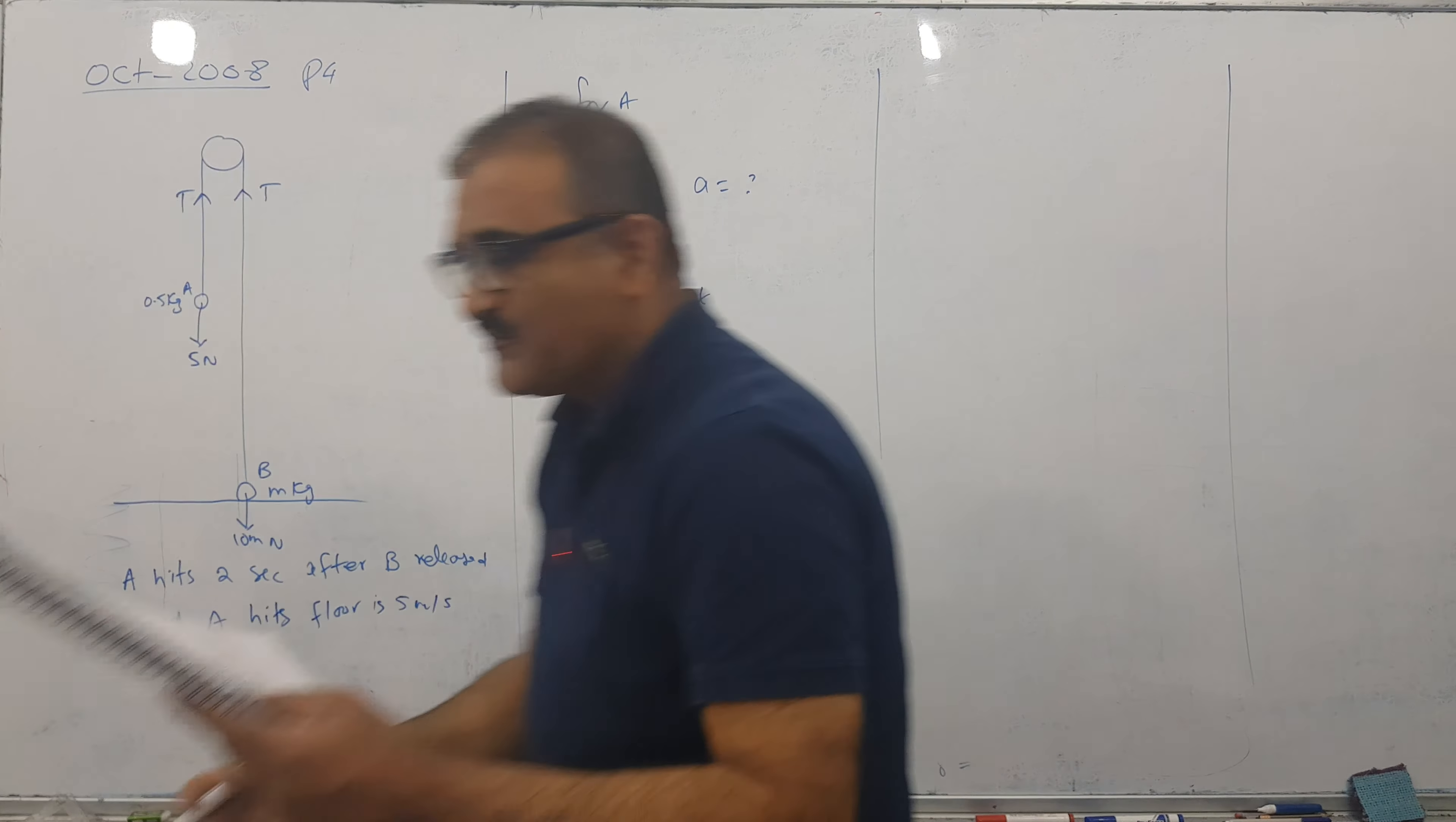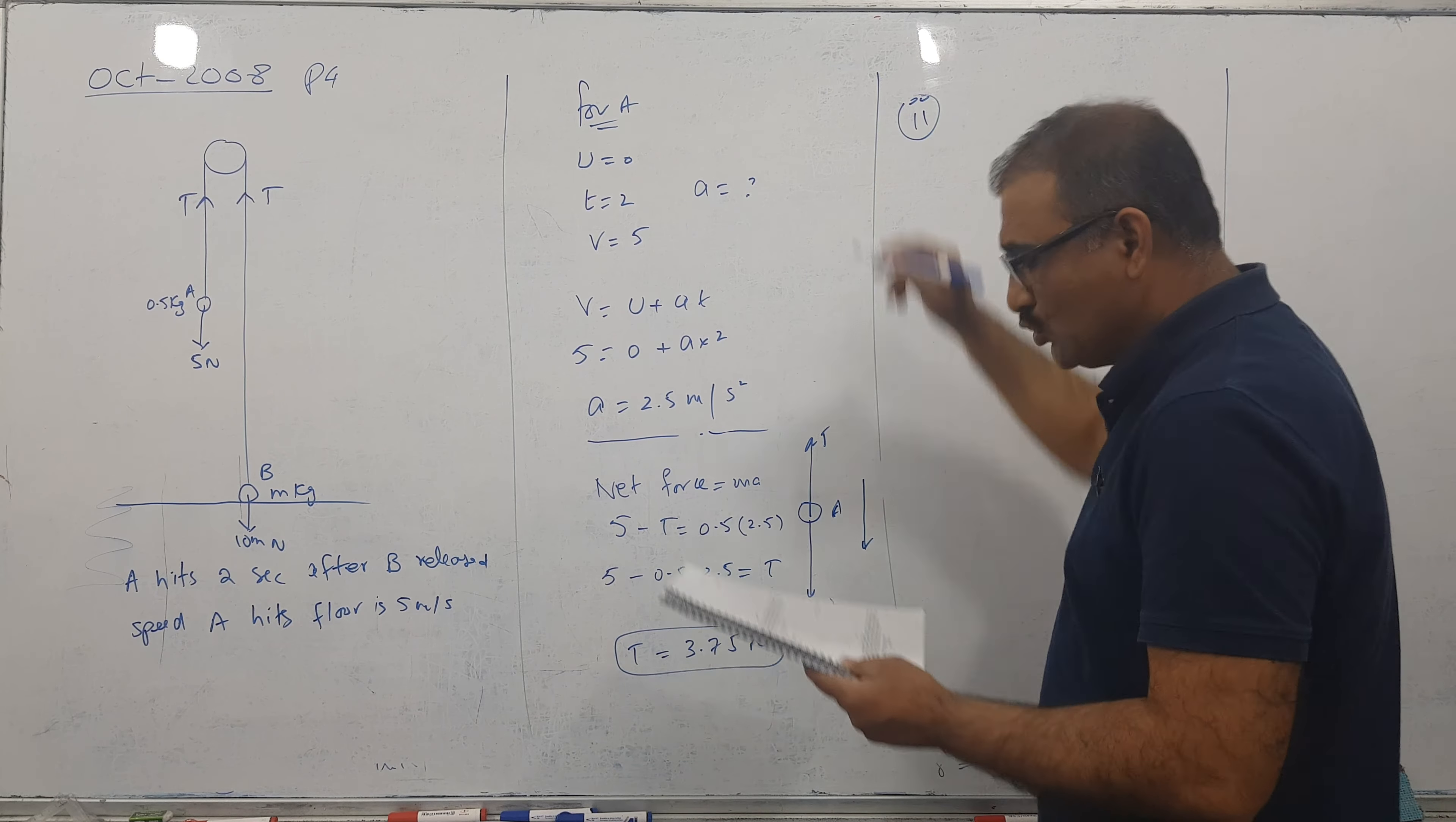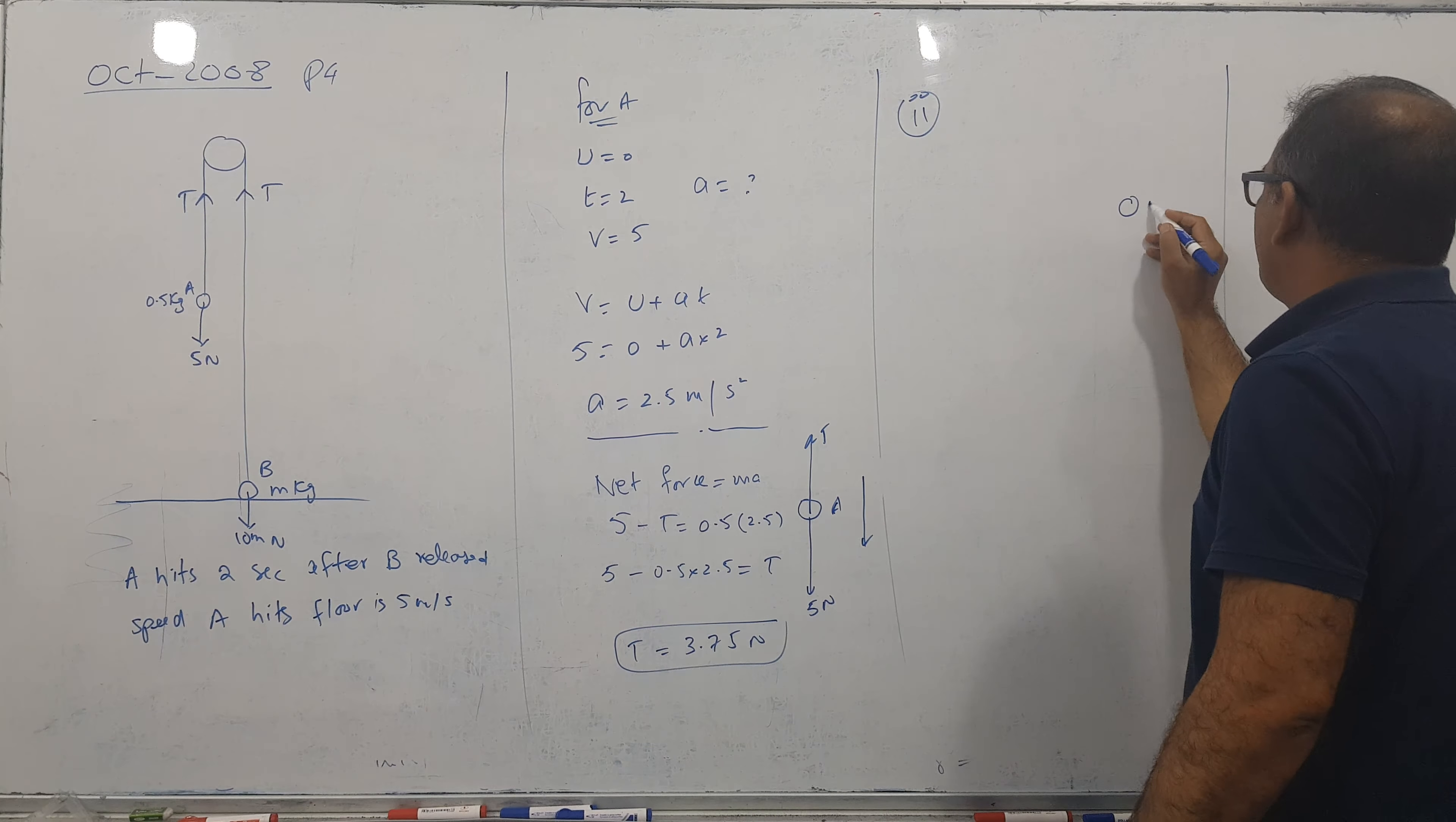So let's go for the next part, 2 mark question and 3 mark question, the 3 mark question part 2. So find out M. We can apply the same plan here, this particle B.